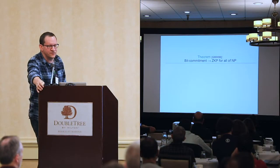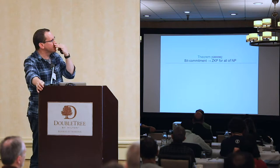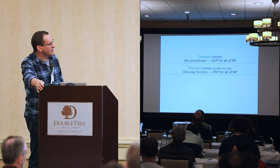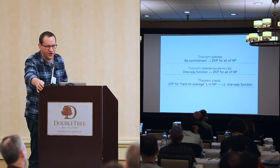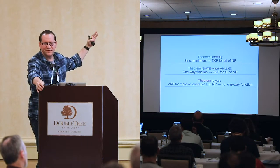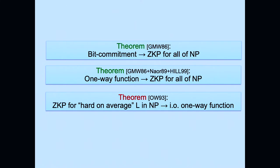Going back to how it all started: following the work of Shafi et al. introducing zero-knowledge proofs, Goldreich, Micali, and Wigderson showed the first general feasibility result — that with a standard bit commitment primitive you can build zero-knowledge proofs for all of NP. These proofs are interactive and not very efficient, but are provably secure. The assumption that one-way functions exist is in some sense necessary, giving a complete picture of feasibility.